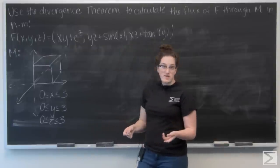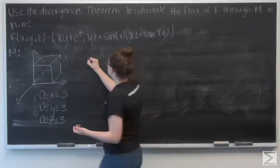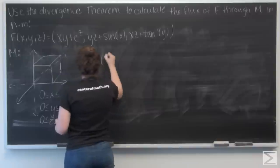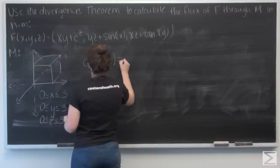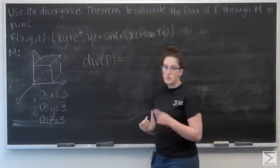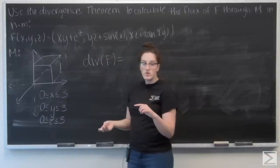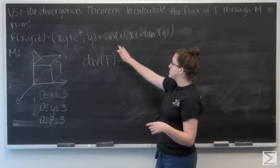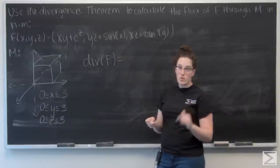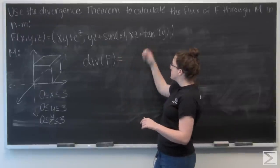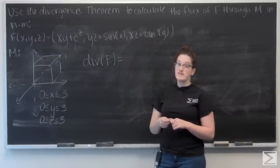So let's go ahead and find the divergence of F. To do that, I want to take the partial derivative of the i component of the vector with respect to x, add it to the partial derivative of the j component with respect to y, plus the partial derivative of the k component with respect to z.